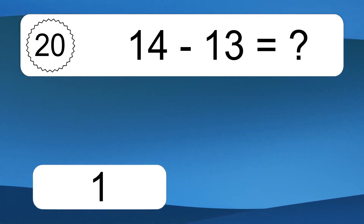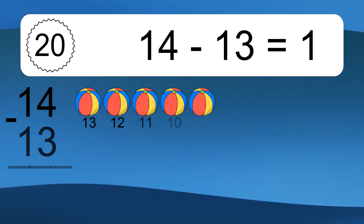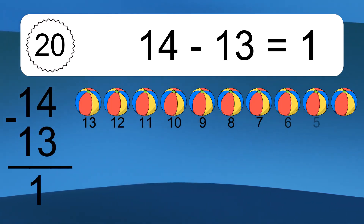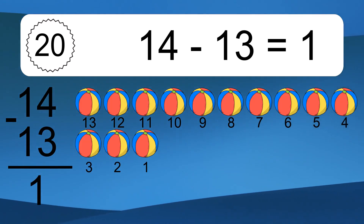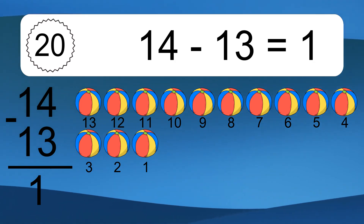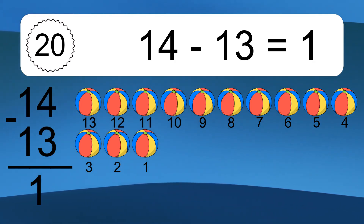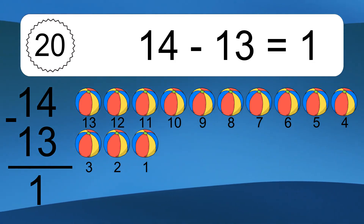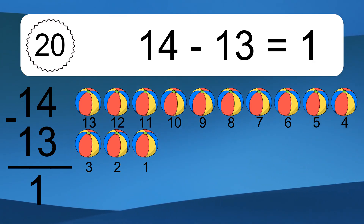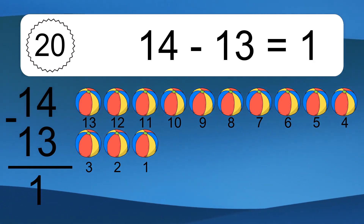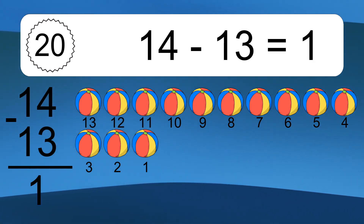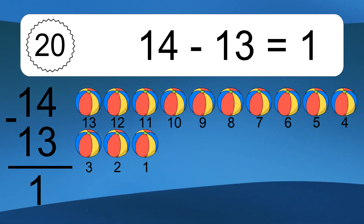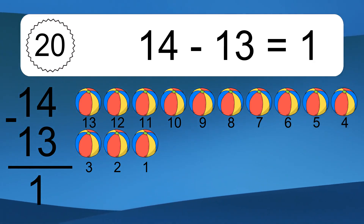14 minus 13 equals 1. Let's count it: 13, 12, 11, 10, 9, 8, 7, 6, 5, 4, 3, 2, 1.